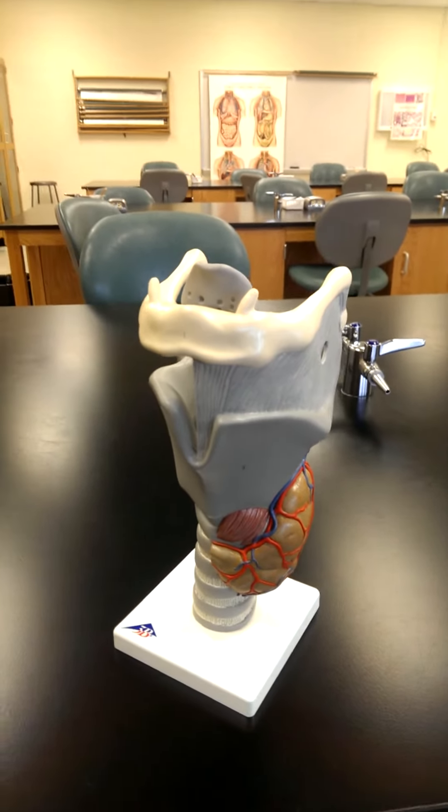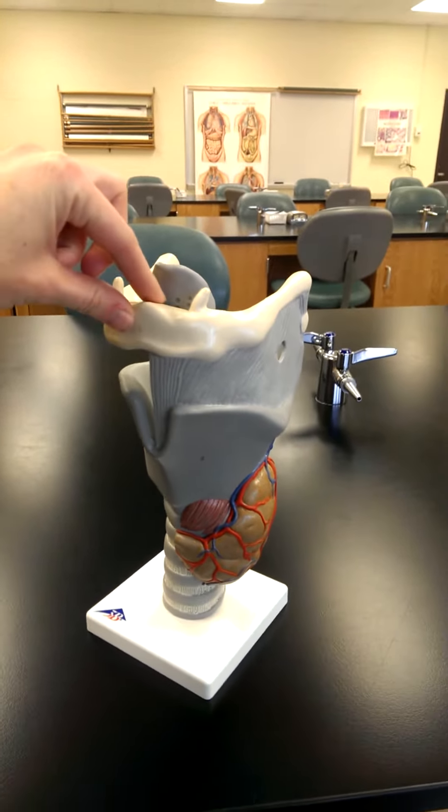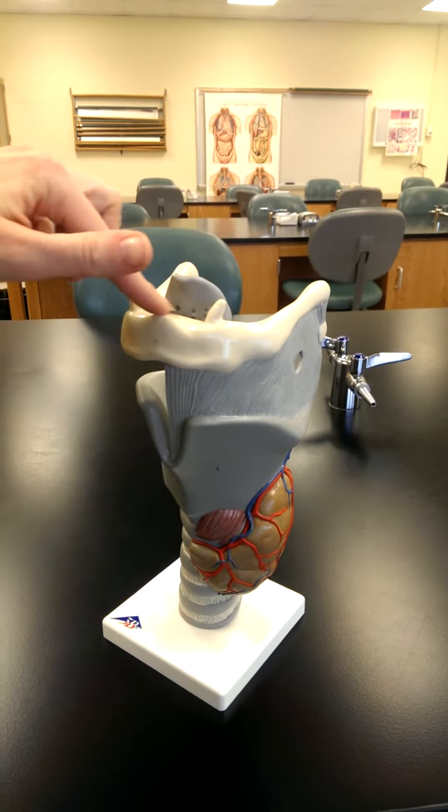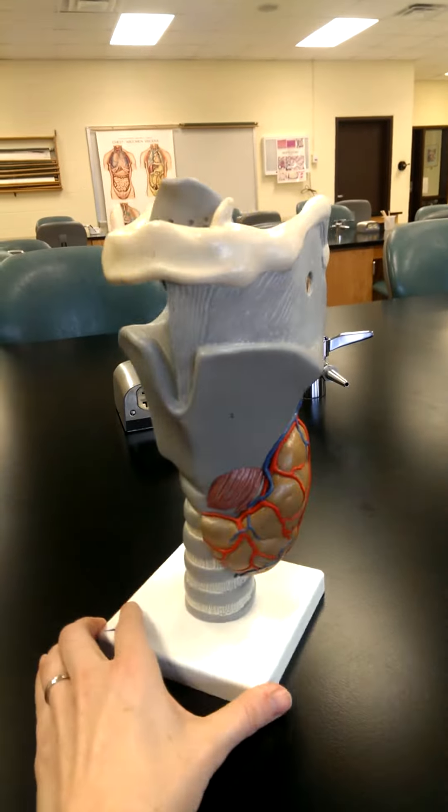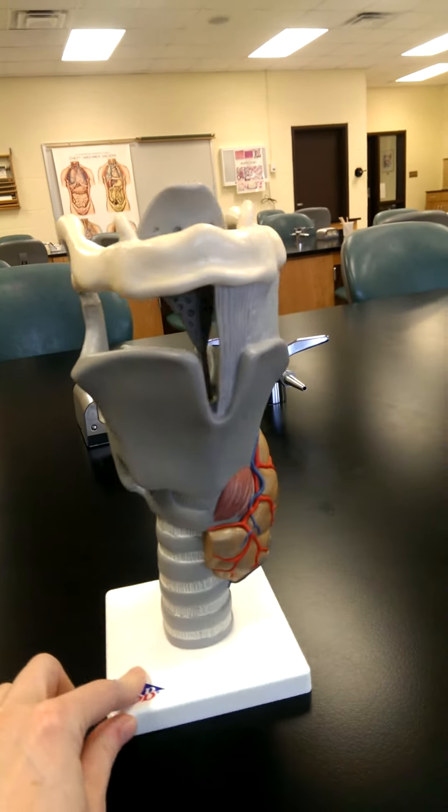This is our larynx model. On the larynx model we can see the hyoid bone superiorly, and then we move inferiorly and we see some laryngeal cartilages.